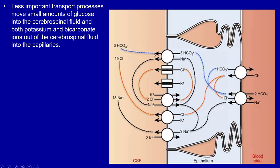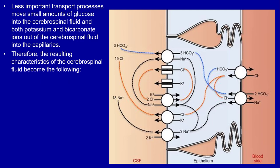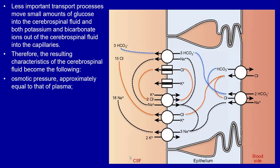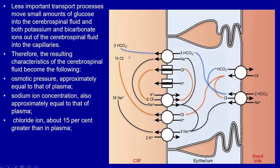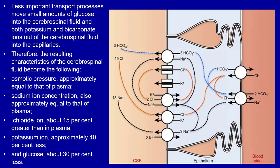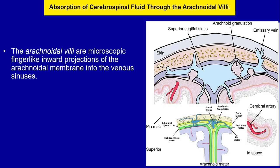Less important transport processes move small amounts of glucose into the cerebrospinal fluid, and both potassium and bicarbonate ions out of the cerebrospinal fluid into the capillaries. The resulting characteristics of CSF are: osmotic pressure approximately equal to that of plasma; sodium ion concentration also approximately equal to that of plasma; chloride ion about 15 percent greater than in plasma; potassium ion approximately 40 percent less; and glucose about 30 percent less.